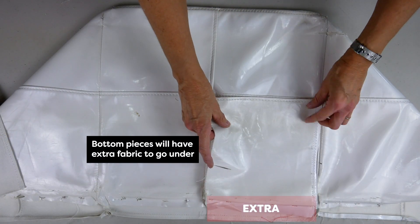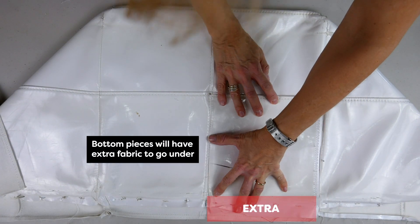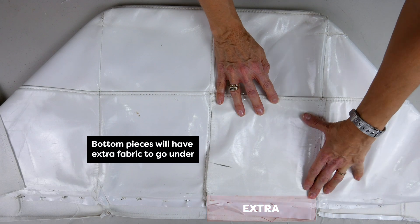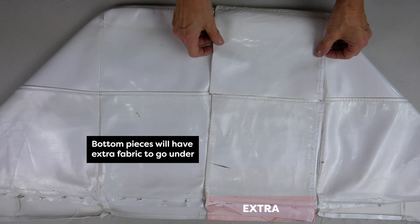I will need to cut eight larger rectangular pieces for the bottom eight squares to allow for the added length that wraps under the ottoman.